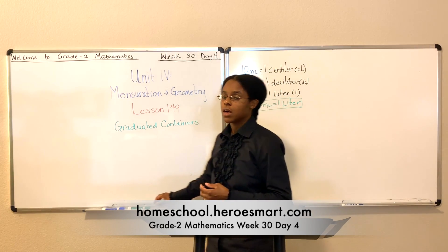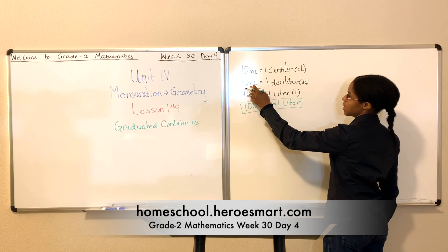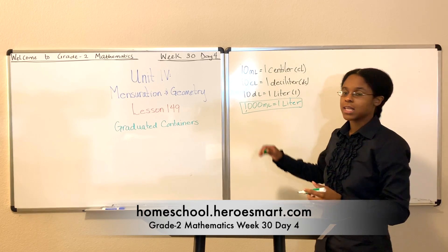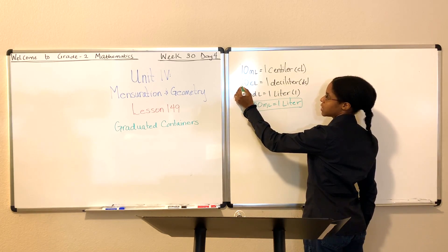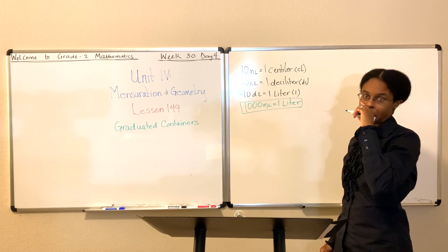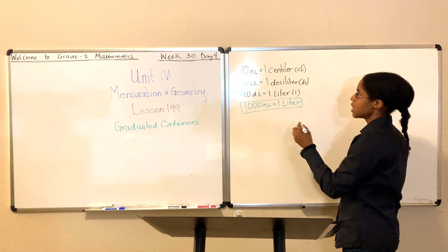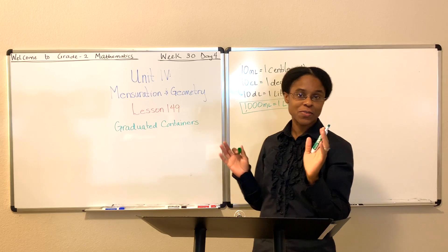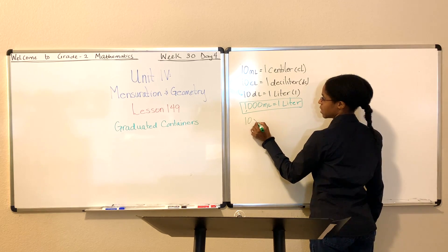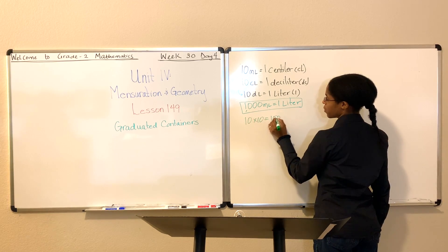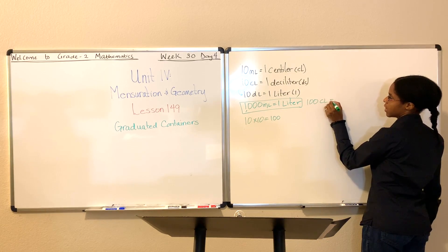There was one additional measurement I wanted to put on the board. If you want to know how many centiliters (CLs) are in one liter, you multiply: 10 centiliters times 10. That gives you 100. Therefore, there are 100 centiliters for every one liter — something good to know if you find yourself measuring and want a point of reference.